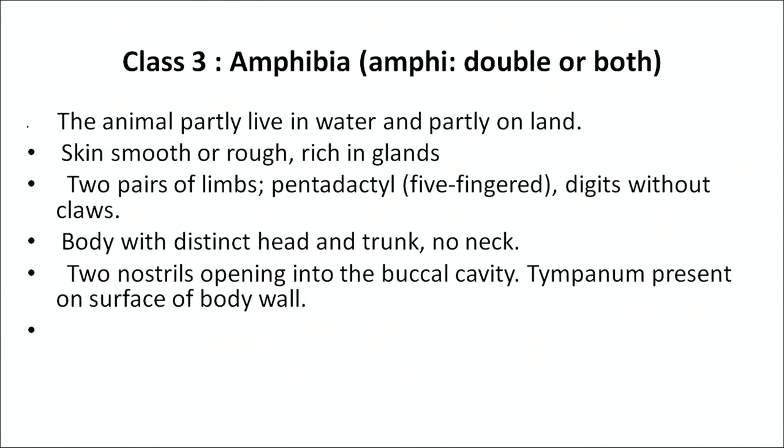The body has a distinct head and trunk with no neck. Two nostrils open into the buccal cavity. Tympanum is present on the surface of the body wall. They lay their eggs in water. In the early larval stage they breathe by gills, but when they turn into adults they breathe by lungs — as when the frog is a tadpole it breathes through gills, and when it turns into a frog it breathes through lungs. Their heart is three-chambered.